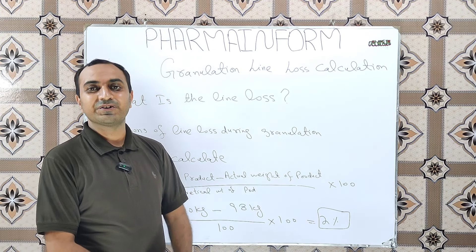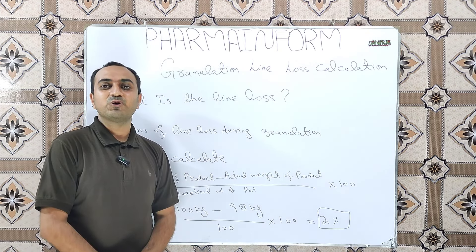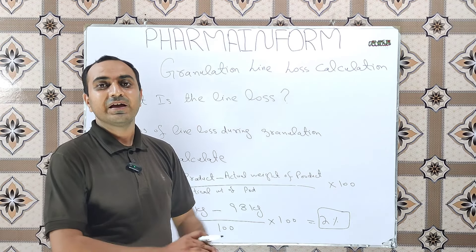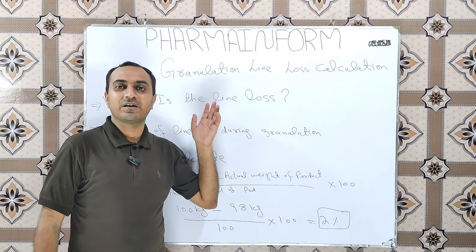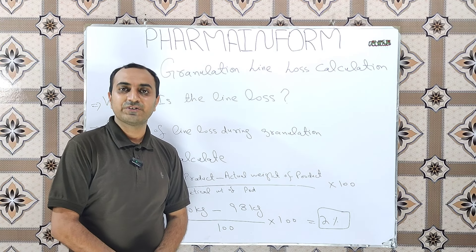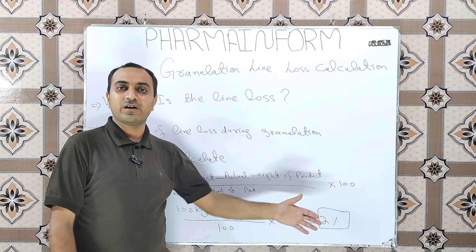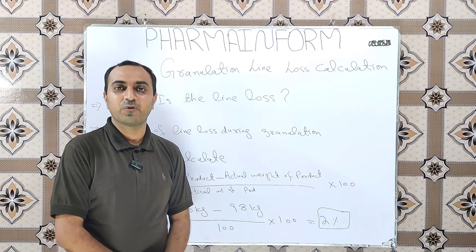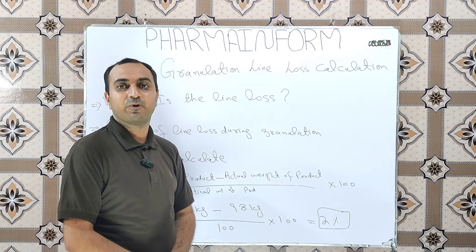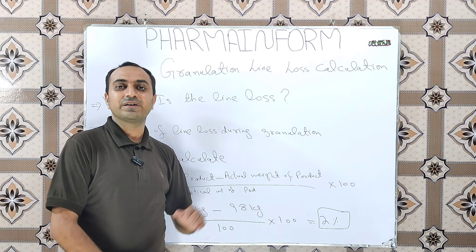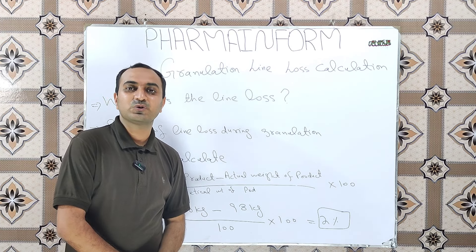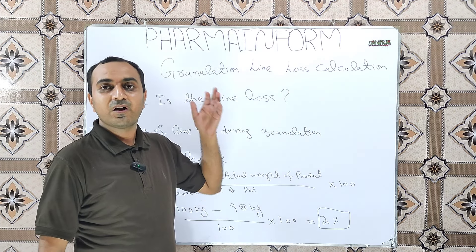Another main step of wet granulation causing line loss is the drying process. We can use tray dryers or fluidized bed dryers (FBD) for drying. In tray dryers, line loss occurs due to the sticking of powder to the trays. In FBD, line loss occurs due to the adherence of powders to the filters, side valves, or the product trolley.